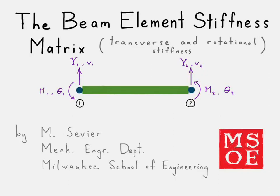Here we're going to take a look at how the stiffness matrix looks for a beam element that only has transverse and rotational stiffness.